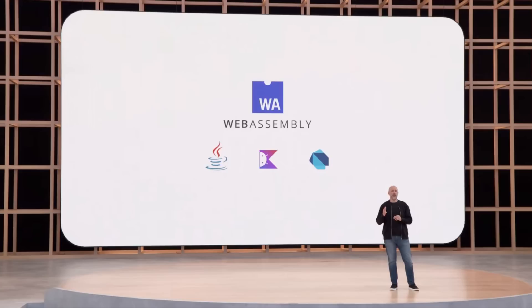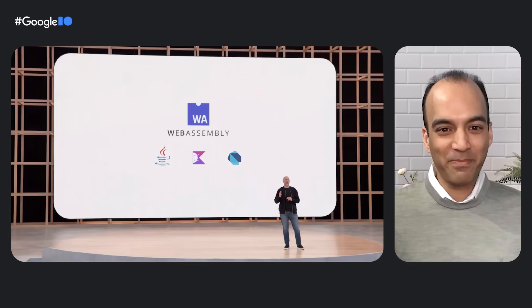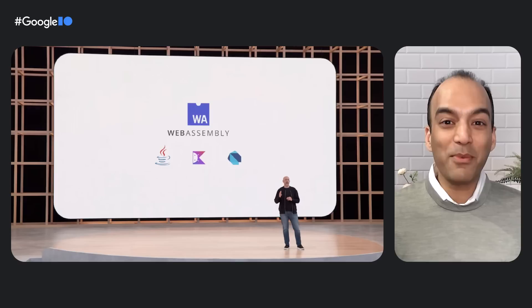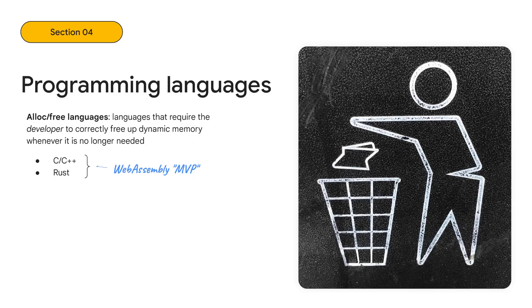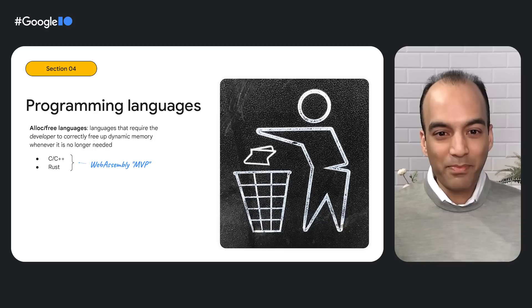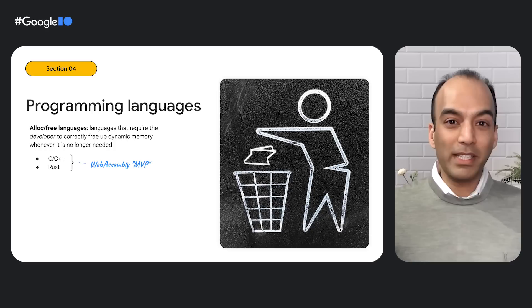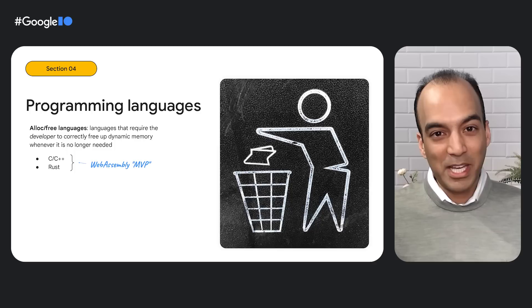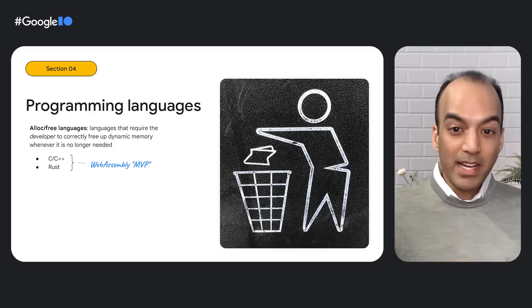Thanks, Thomas. You may remember at last year's Google I/O, we previewed our plan to bring new languages like Java, Kotlin, and Dart to the web. WebAssembly has taken off among developers using C and C++, as well as a growing community around Rust. In these languages, developers are responsible for cleaning up after themselves — freeing objects from memory after an application is done using them. This class of languages was the primary focus of the early WebAssembly standard, what we call WebAssembly MVP, in part because these were the languages many large desktop applications were written in, and also because they had somewhat simpler requirements when developing the WebAssembly standard.